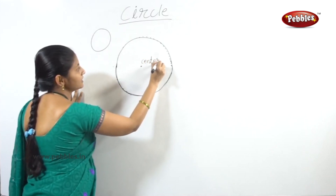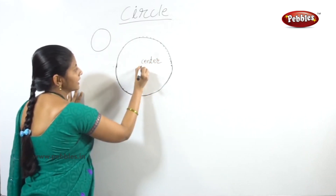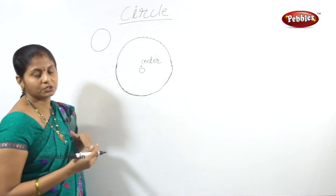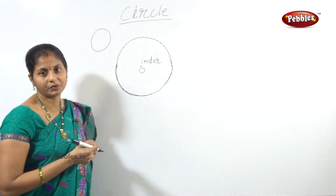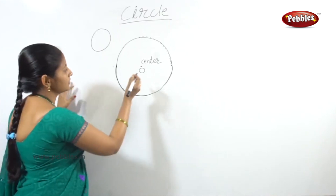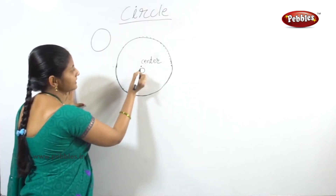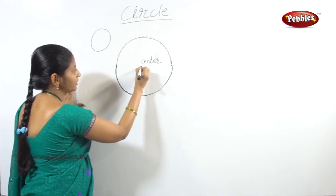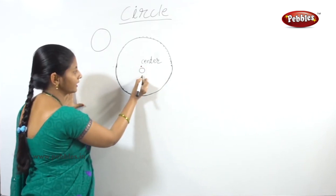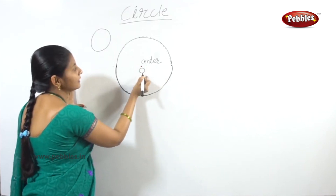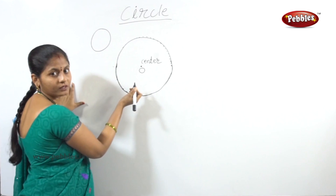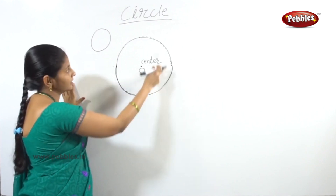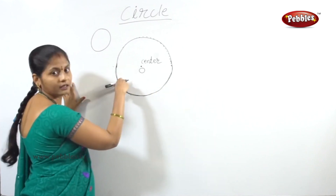The center of the circle is denoted by the capital letter O. O represents the center of the circle. This center of the circle is the fixed point. The point O indicates the center, so O is the center of the circle.